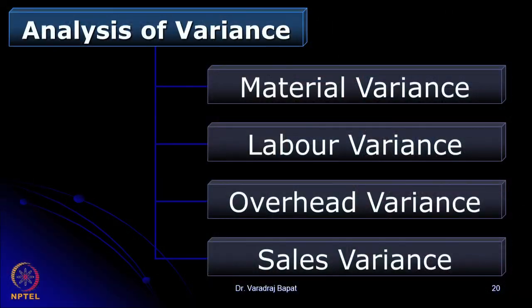So there are three major reasons for variance: efficiency-related, price-related, and volume-related. Variances can also be broken down as per elements of cost — we can break down the variance into material, labor, overheads, and sales variances. Overhead variances in turn can be broken into variable overheads and fixed overheads. These are the major causes leading to variance.